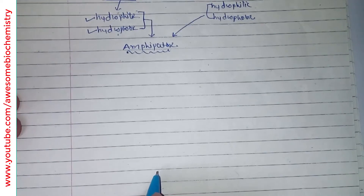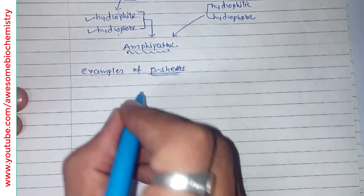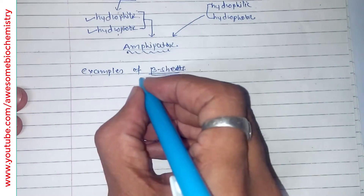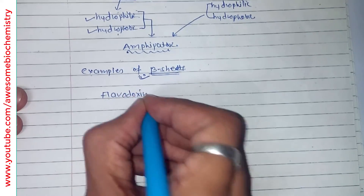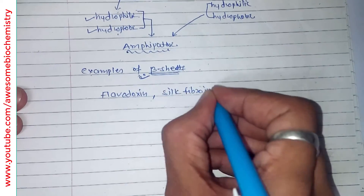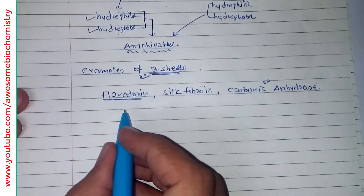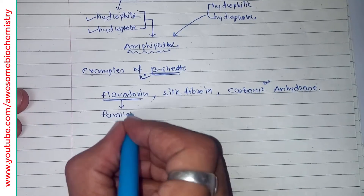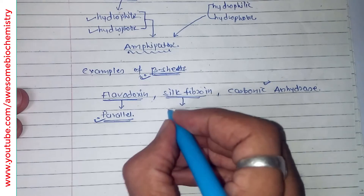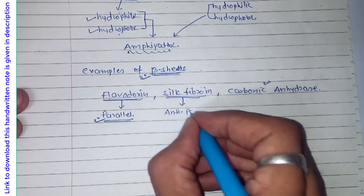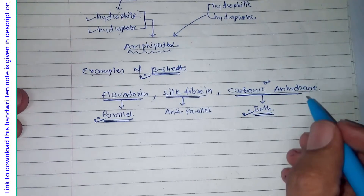What are the different examples of beta sheets? Beta sheet structure occurs in almost all proteins, but certain proteins contain so much beta sheet content that they are worth mentioning. The first example is flavodoxin, where most beta sheets are in parallel arrangement. The second example is silk fibroin, which is exclusively made up of beta sheets in anti-parallel arrangement. The third example is carbonic anhydrase, where both parallel and anti-parallel arrangements are seen in a 50-50 ratio.